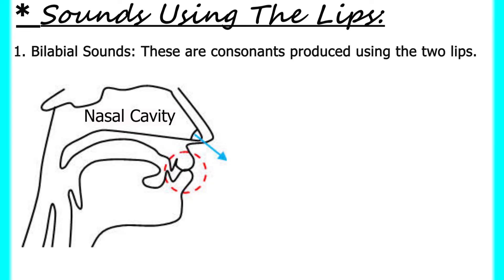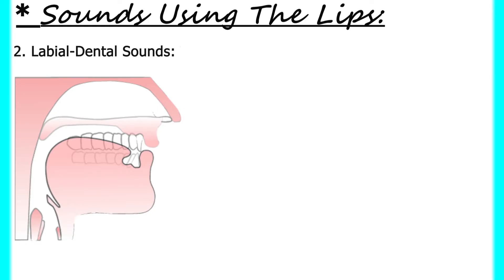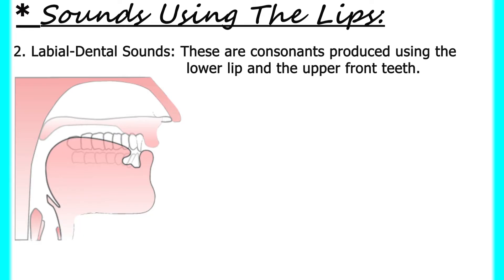When the lips are tightly pressed and there is a total obstruction of airflow, air comes out through the nose, producing a bilabial nasal sound. The soft palate is lowered to allow airflow into the nasal cavity, as in 'mm' in man. When producing 'mm,' the lips are tightly pressed and air comes out through the nose, not the mouth. Consonants produced using the lower lip and the upper front teeth are called labiodental sounds, as in 'f' in fan and 'v' in van.